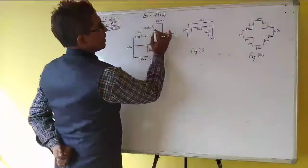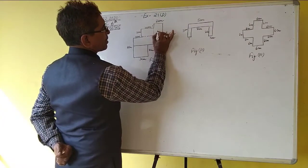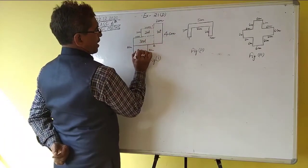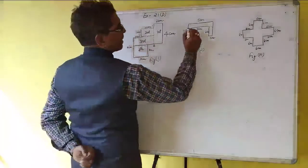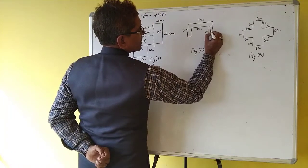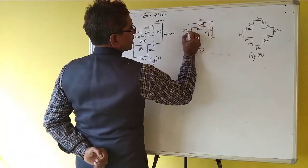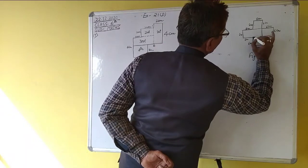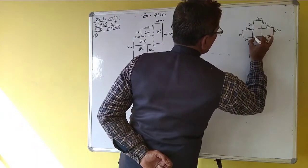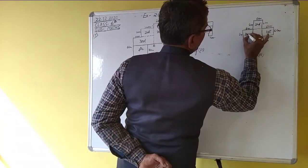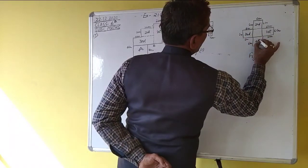In the first figure, we have rectangles: first, second, third, and fourth. In the second figure, there are rectangles: first, second, and third. In the third figure, we have rectangles: first, second, third, fourth, and fifth.